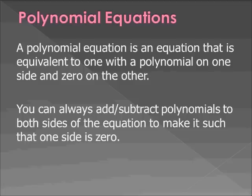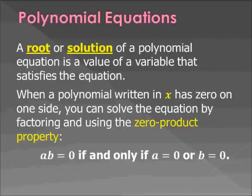A polynomial equation is an equation that is equivalent to one with a polynomial on one side and 0 on the other. You can always add or subtract polynomials to both sides to make it such that one side is 0. This is no different than solving single-variable equations like x plus 3 equals 4. A root or solution of a polynomial equation is a value of a variable that satisfies the equation. When a polynomial written in x has 0 on one side, you can solve the equation by factoring and using the zero product property.